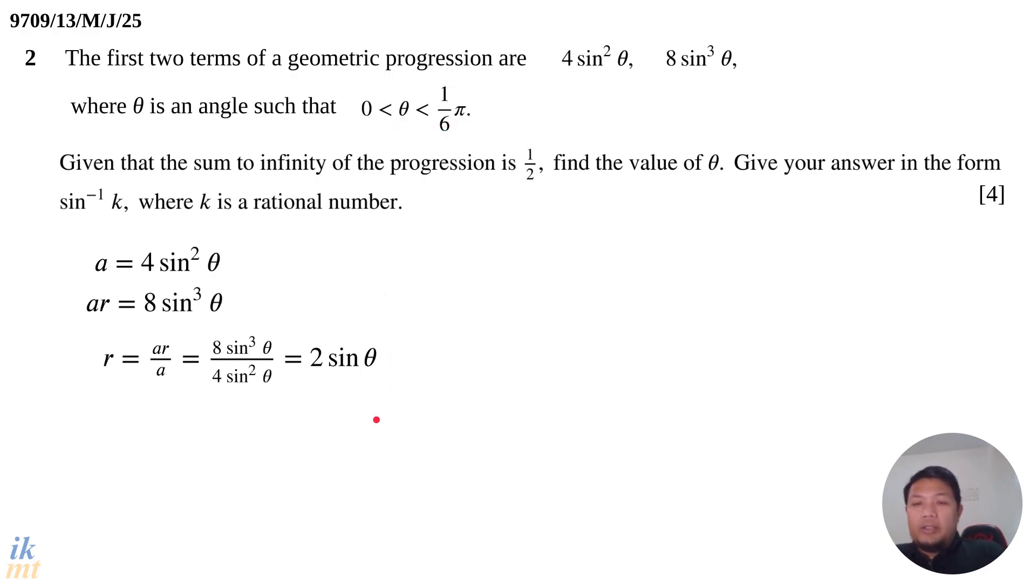We know the sum to infinity exists because it's given in the question, but I want you to have this thought running in your mind when you deal with questions like this. When you deal with trigonometry, always think about what are the possible values of θ. If you have that going on in your mind, it will be much faster for you to reject any answers that are not supposed to be accepted.